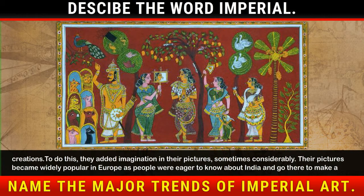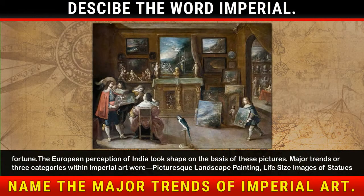Their pictures became widely popular in Europe as people were eager to know about India and go there to make a fortune. The European perception of India took shape on the basis of these pictures. Major trends or three categories within imperial art were picturesque landscape painting, life-size images of statues, and history painting.